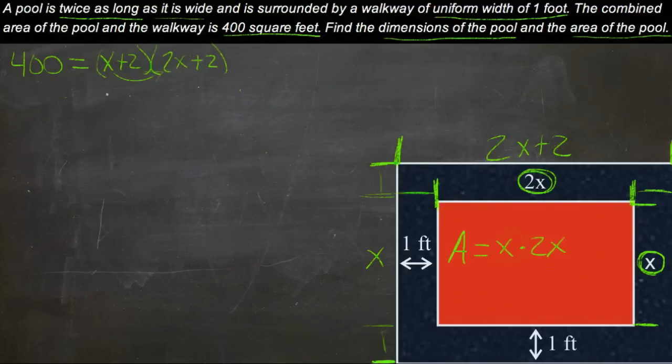Do that multiplication out. We get 2x squared plus 2x plus 2 more x, so plus 6x, plus 2 times 2, which is 4.